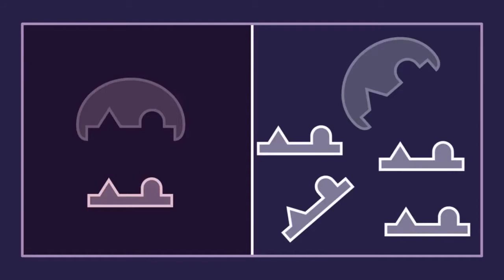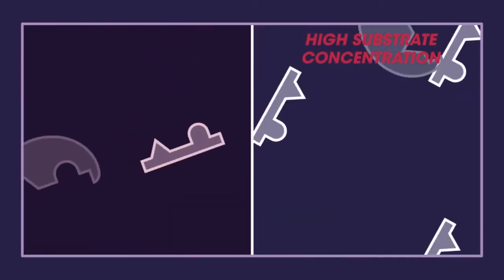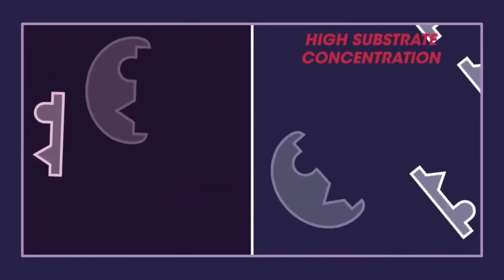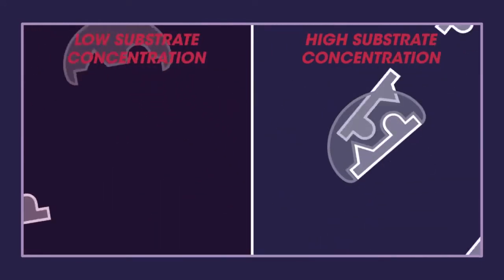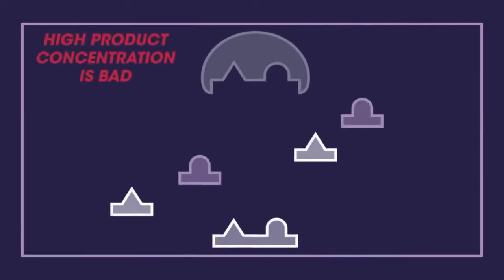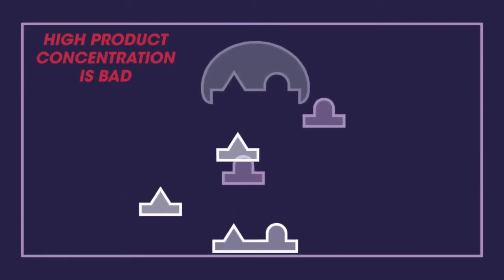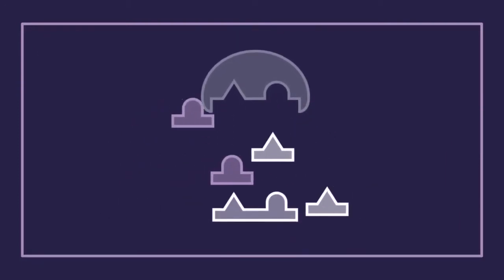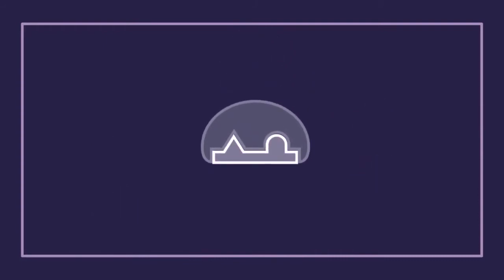Each enzyme has optimum conditions under which it works best. Firstly, there needs to be enough substrate around — they need a high enough substrate concentration for the reaction that they catalyse. If there is too little substrate, then the rate of reaction is slowed. Sometimes, if there is too much product around, then the reaction slows because the enzymes and substrates have less chance of bumping into each other. So the product needs to be removed for a higher rate of reaction.